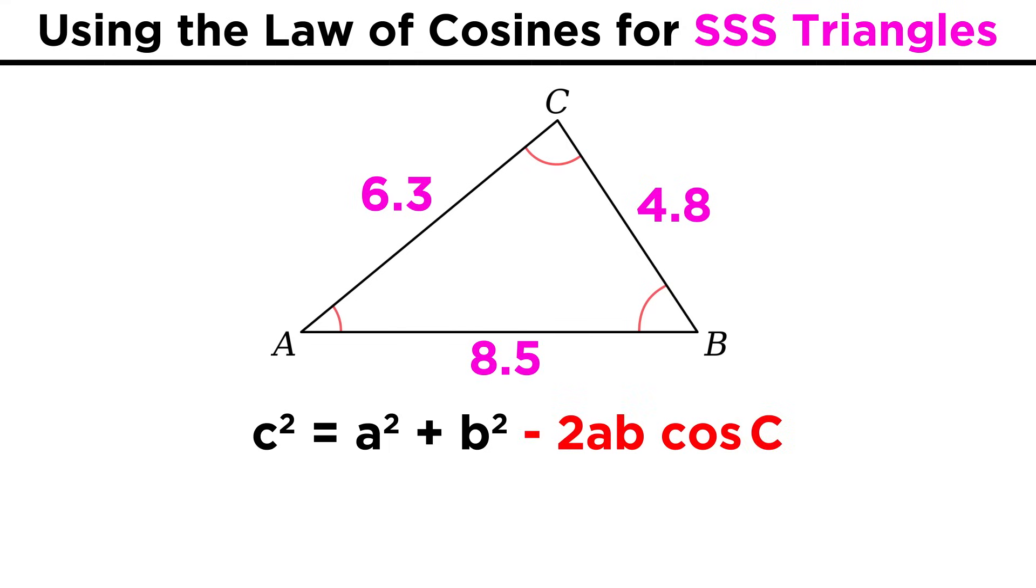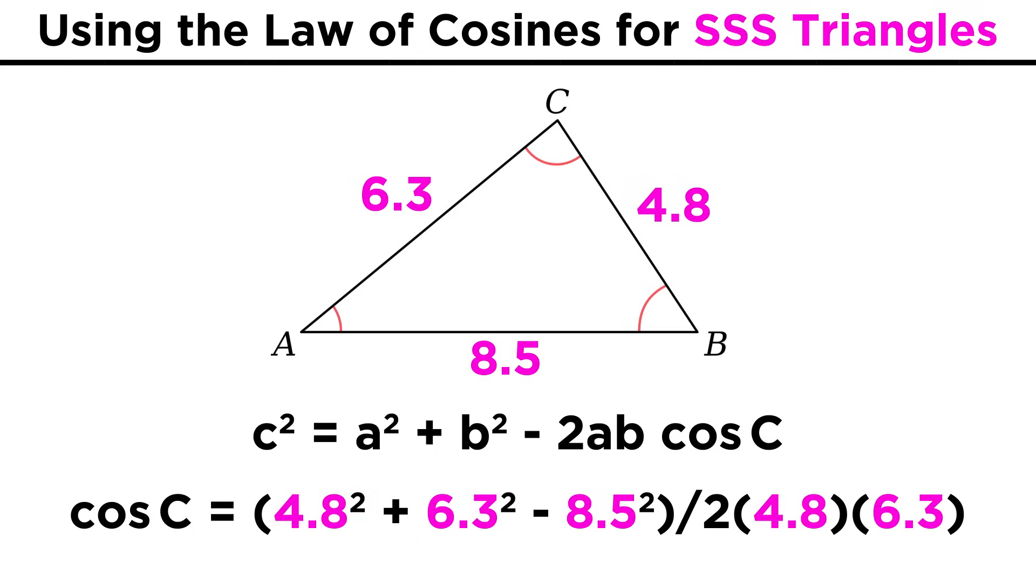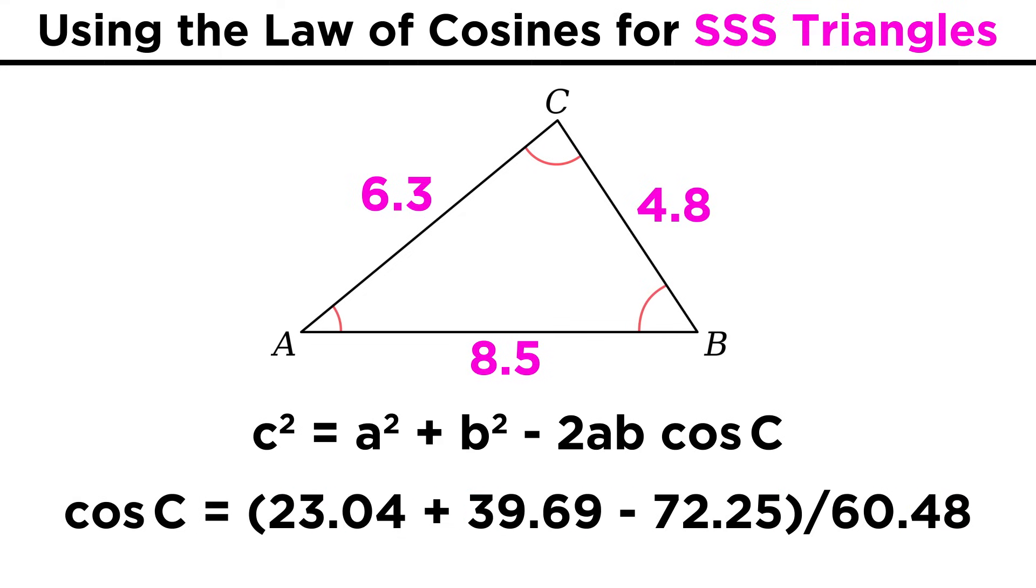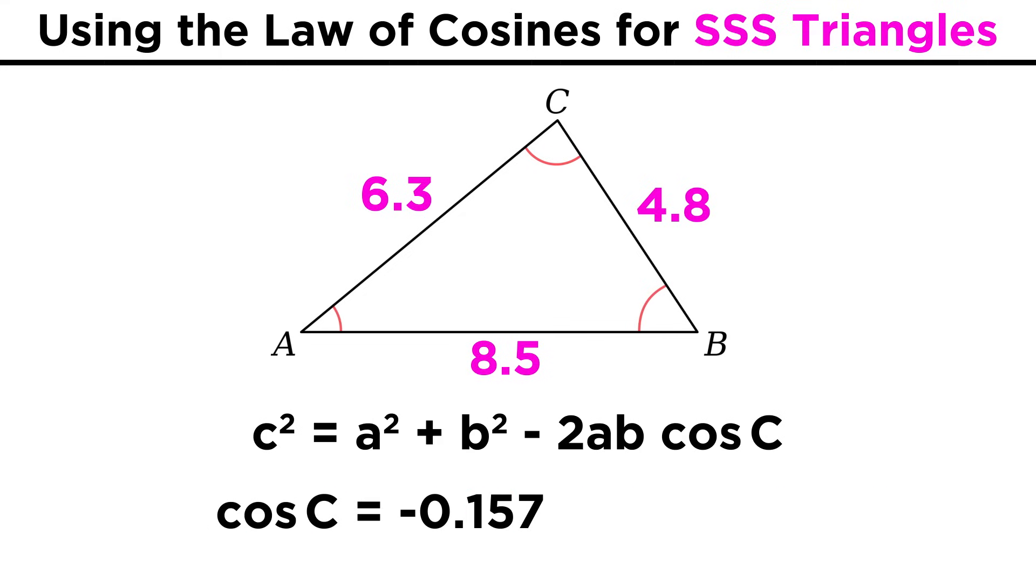Bring this term containing the angle to the other side and make it positive, and bring C squared to the other side. Then we just divide, and now we are ready to plug in all the values. We plug in side lengths A, B, and C, simplify, and we get our answer for cosine of C. We take the inverse cosine, and there's our angle to the nearest tenth.